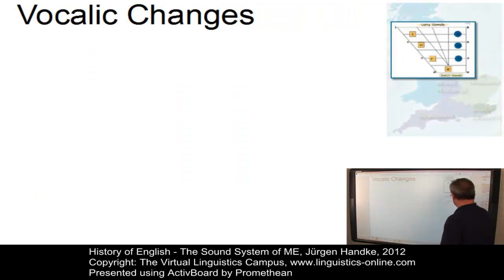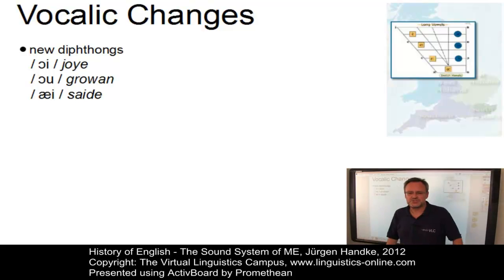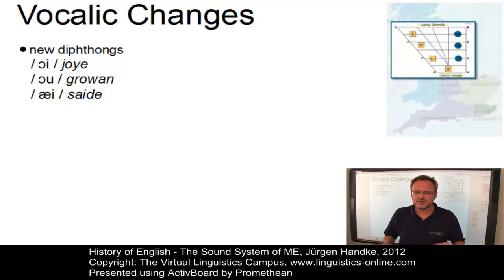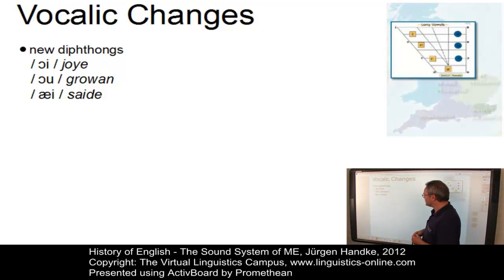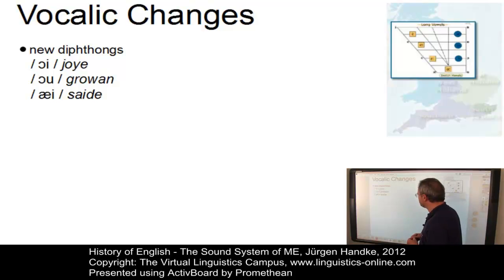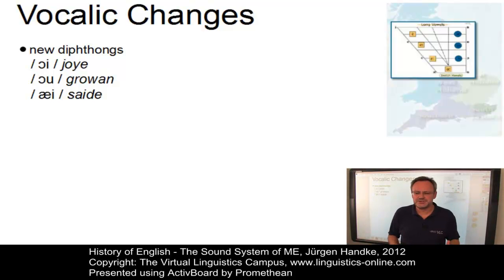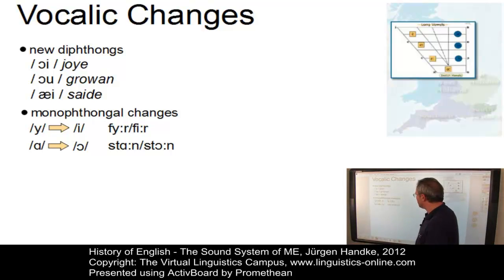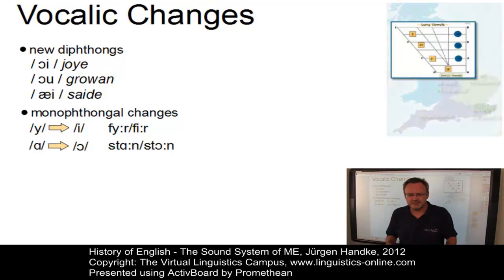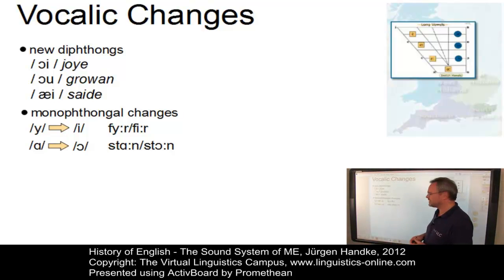Let's now look at some vocalic changes. The most significant vocalic change in Middle English was the addition of new diphthongs, due to the influence of French or due to some consonantal changes. New diphthongs included OI as in 'joye', OU as in 'growen', and EI as in 'seide'. Further inventorial changes concerned the loss of the rounded front vowel /y/, where 'fȳr' became 'fier', and the raising of the low back vowel /a/ to /o/, where 'stān' became 'stone'.